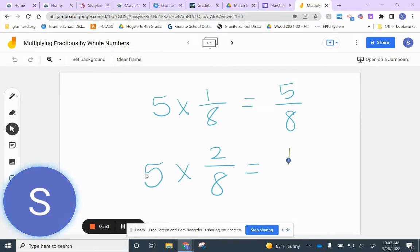If you chose ten eighths, or because you saw that you had an improper fraction, and you had one and two eighths, that would be correct. So either of these are correct. You have ten eighths, or you have one and two eighths. That's a correct answer. So let's talk about that.